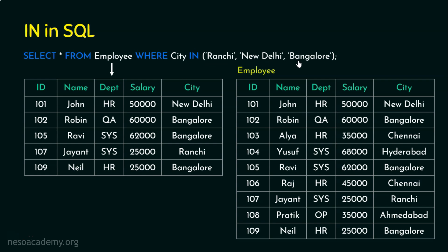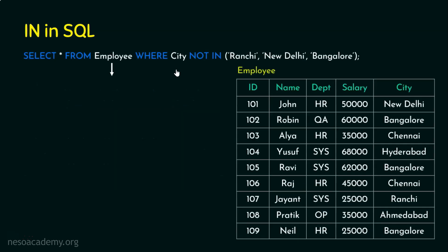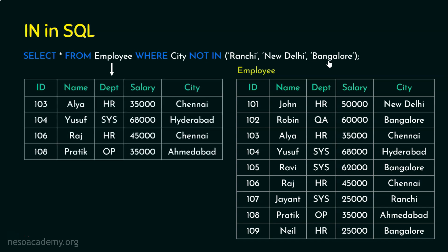Suppose we want rows where the city is NOT Ranchi, New Delhi, or Bangalore — essentially negating the output. We can use the negating keyword NOT. The query becomes: SELECT * FROM employee WHERE city NOT IN ('Ranchi', 'New Delhi', 'Bangalore'). The output will be rows with cities other than those three.